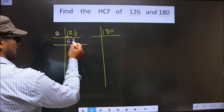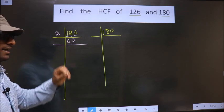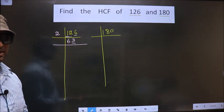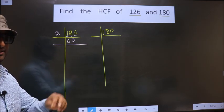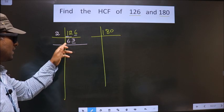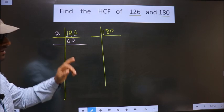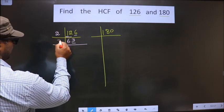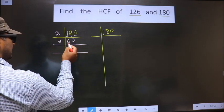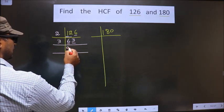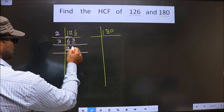Now, in this number, last digit is 3, which is not even. So this is not divisible by 2. Next prime number is 3. To check divisibility by 3, we should add the digits. That is 6 plus 3 equals 9. Is 9 divisible by 3? Yes. So this number is also divisible by 3. So we take 3 here. First number is 6. When do we get 6 in 3 table? 3 times 2 is 6. Next number is 3. When do we get 3 in 3 table? 3 times 1 is 3.